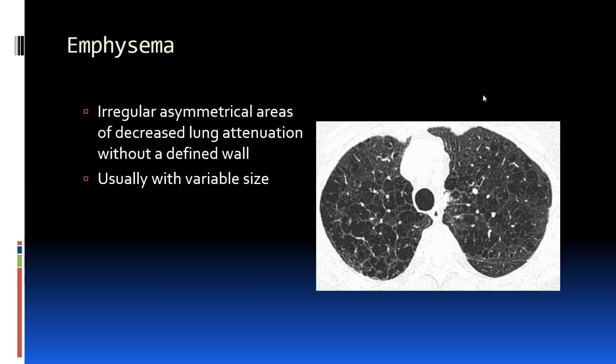Emphysema consists of irregular, asymmetric areas of decreased lung attenuation without a defined wall. The size can be variable, and depending on the disease process, the distribution can differ as well.